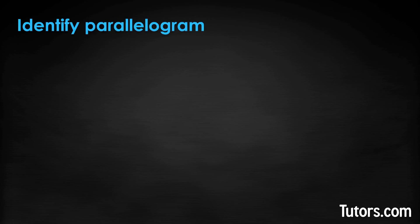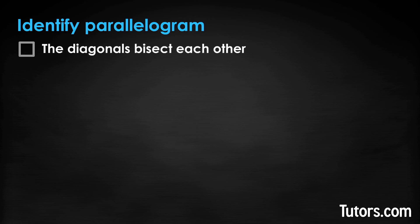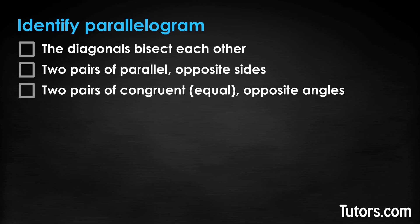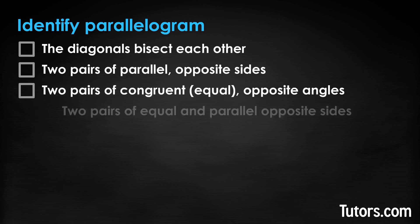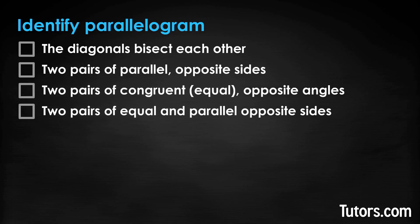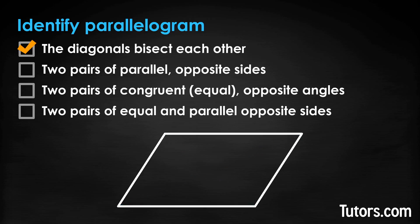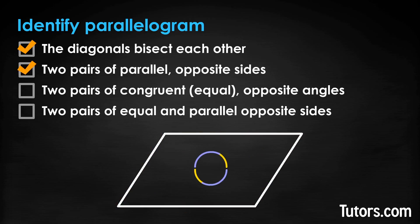You do not need to go through all four identifying properties — check for any one of these: 1. The diagonals bisect each other. 2. There are two pairs of parallel opposite sides. 3. There are two pairs of congruent equal opposite angles. 4. There are two pairs of equal and parallel opposite sides. You can also use proof theorems about a plain closed quadrilateral: if it has bisecting diagonals, two pairs of opposite congruent sides, or consecutive supplementary angles, it is a parallelogram.